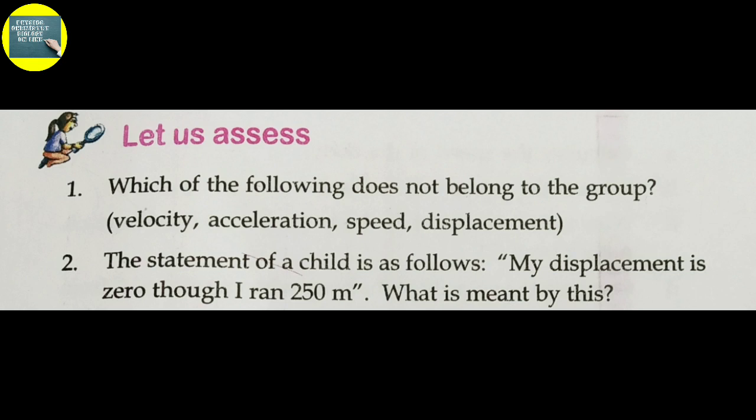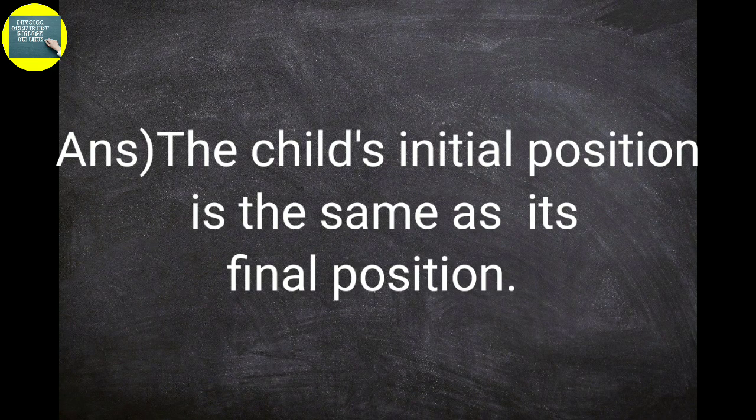The meaning of displacement being 0 is that the initial position and final position are the same. So we can say that the child reached the starting point again, making displacement 0 since initial and final positions coincide.